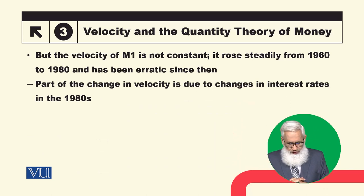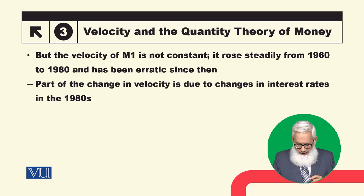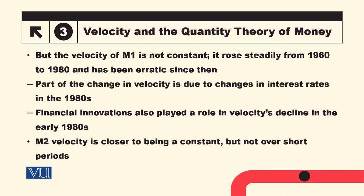Part of the change in velocity is due to changes in the interest rate, particularly after 1980. Another reason for the change in velocity is financial innovations — modern techniques and transaction methods cause velocity of money to change. M2 velocity is closer to being constant; M1 is not constant empirically. M2 is relatively observed to be constant, but not over short periods. So this is money demand, velocity, and the Quantity Theory of Money. Thank you very much.